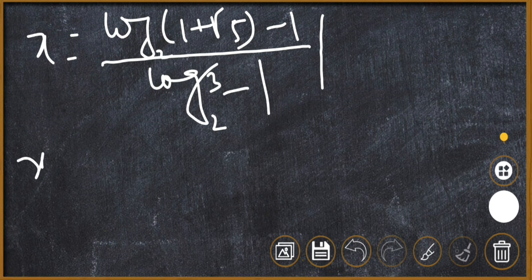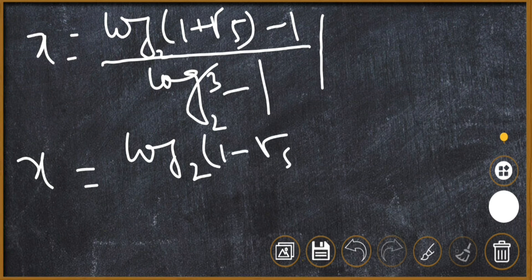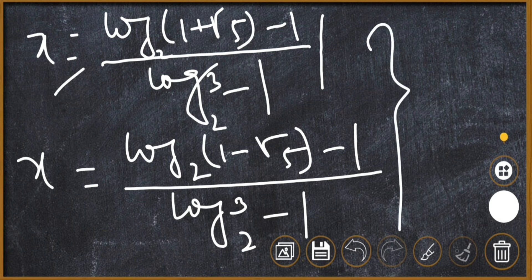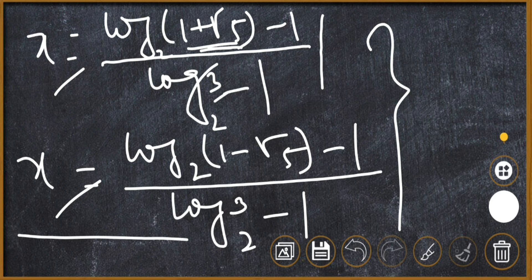The second value of x equals [log₂(1 − √5) − 1] divided by [log₂(3) − 1]. These are the two values of x that are the solution to the given equation. If we substitute the logarithm values, we will get the simplified result.